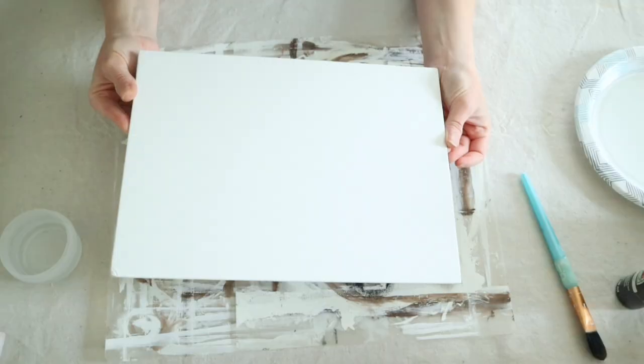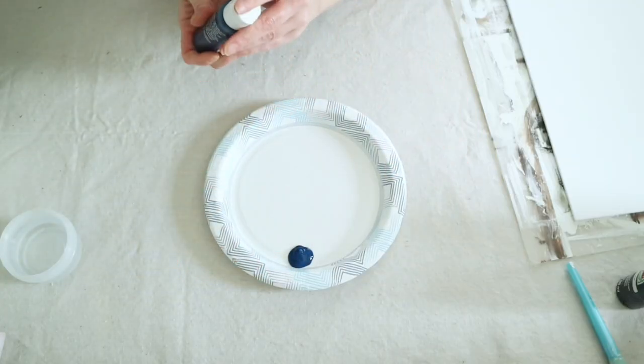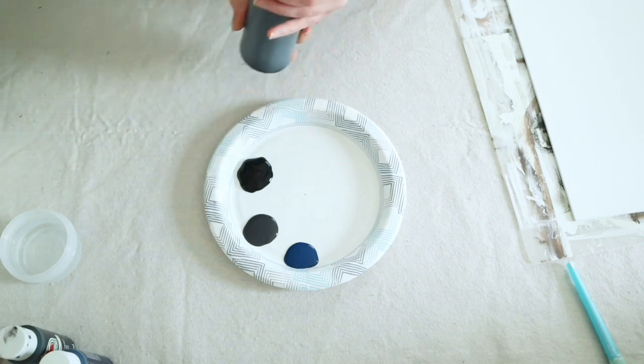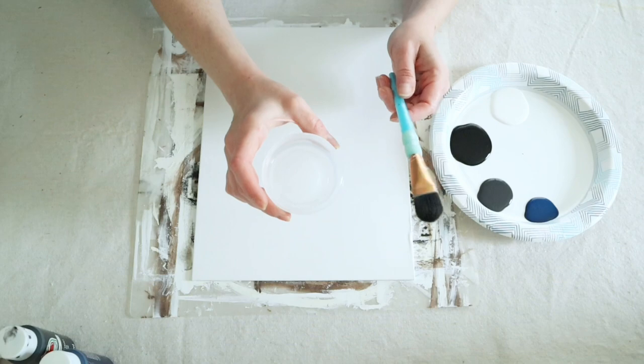For this project, I grabbed a 9x12 canvas from Walmart. Here I'm just laying out some of my paints that I'll be using. I have Admiral Blue, Pavement, Black, and White, and I'm also grabbing a little bowl of water to keep my paintbrush wet for this process.